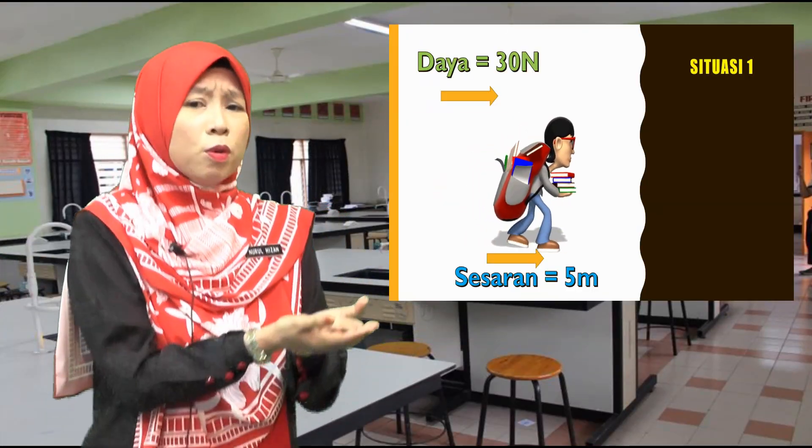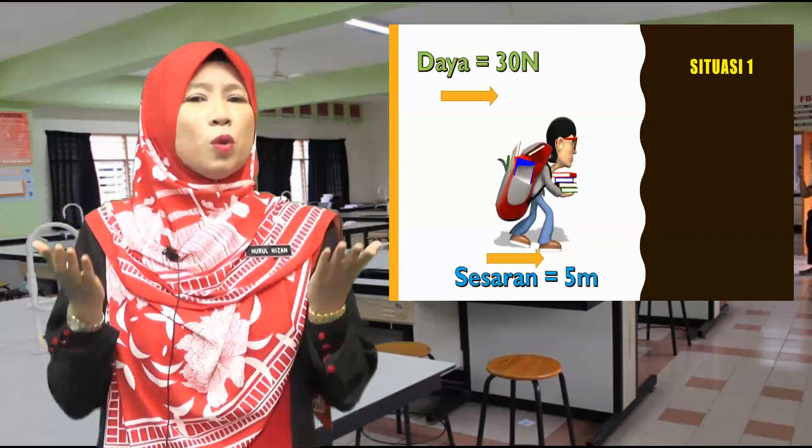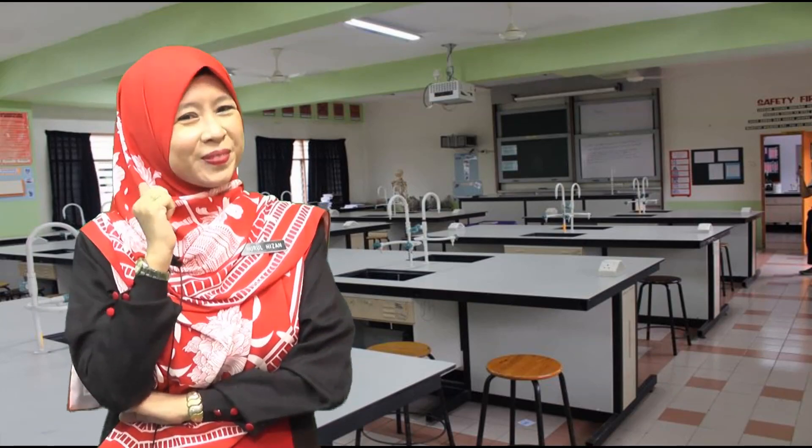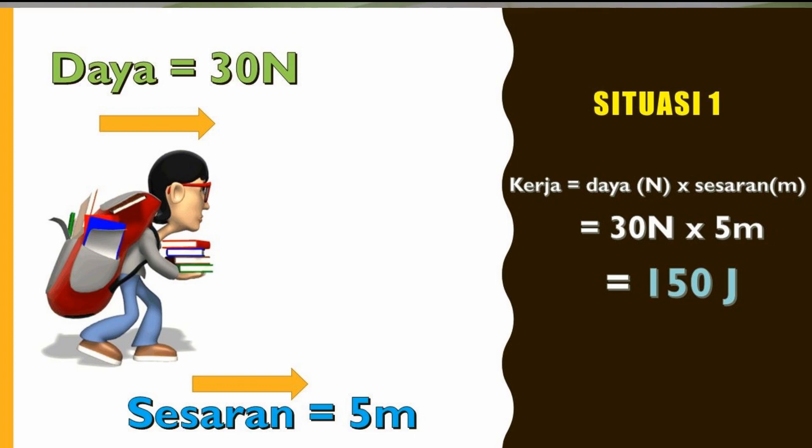Jom kita cuba hitung jumlah kerja bagi beberapa contoh situasi bersama-sama. Ahmad sedang membawa beberapa buah buku dengan daya 30 Newton dan membawa buku tersebut ke suatu tempat dengan sesaran 5 meter. Berapa jumlah kerja yang dilakukan oleh Ahmad? Kita gunakan formula W = FS. Gantikan nilai daya 30 Newton dan sesaran 5 meter ke dalam formula. Jumlah kerja yang dilakukan oleh Ahmad ialah 150 Joule.